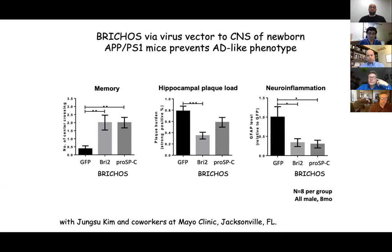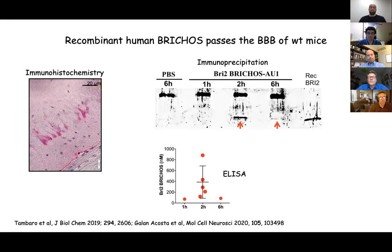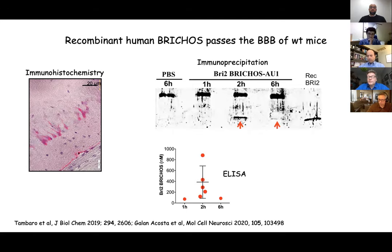This is promising from a therapeutic point of view, but not yet really translatable to humans since it was expressed from day one in the mouse pups. However, the recombinant BRICHOS also passes the blood-brain barrier. When BRICHOS2 was injected in the tail vein of wild-type mice, we can detect it in the brain by immunohistochemistry and by immunoprecipitation. Several hundreds of nanomolar of BRICHOS are found after two hours in brain homogenates, and up to one percent of the total amount injected passes the blood-brain barrier — which is surprising because antibodies, which are bigger proteins, practically do not pass the blood-brain barrier at all.